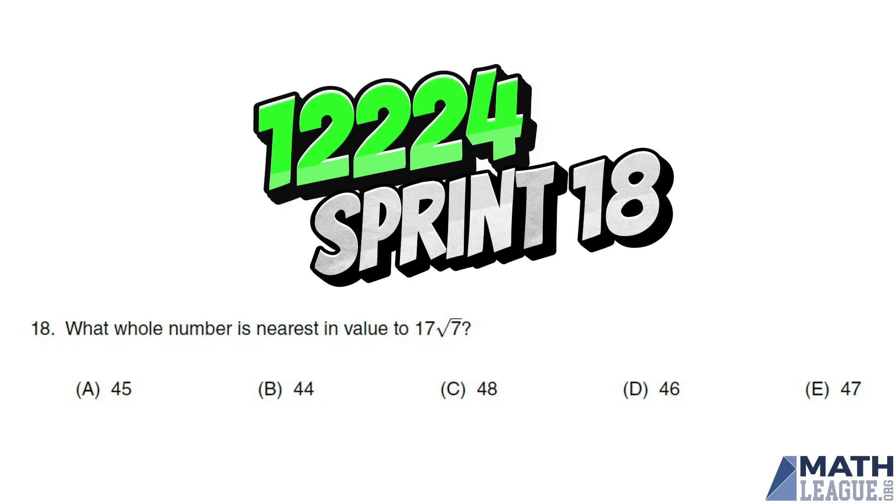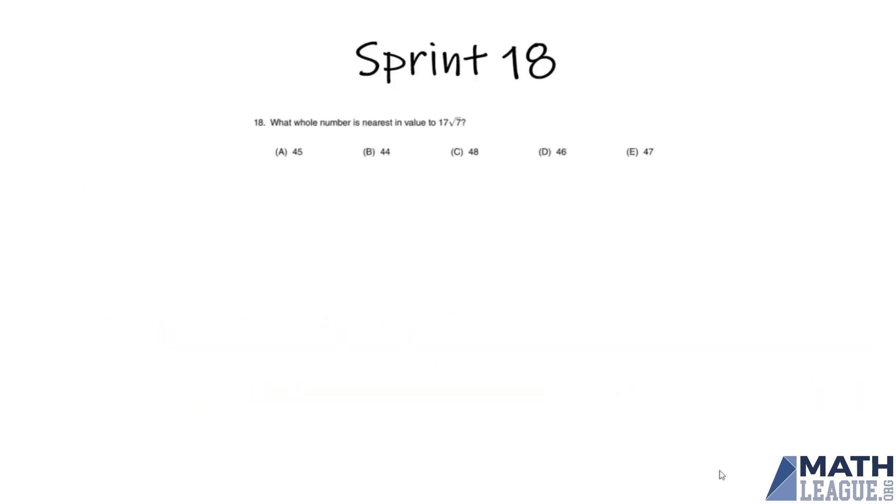So it may seem like this is very difficult to approximate. So instead of computing root 7, we're going to instead square 17 root 7, so that we can approximate with squares, which would be much easier.